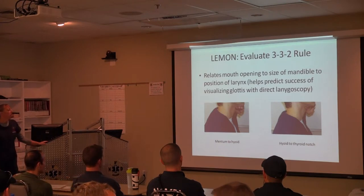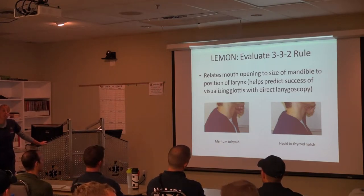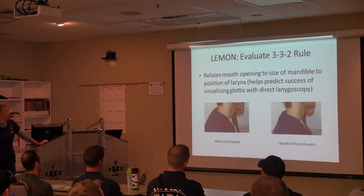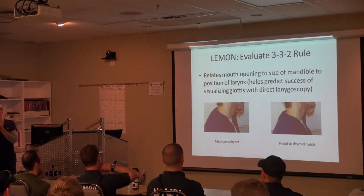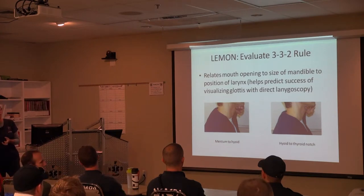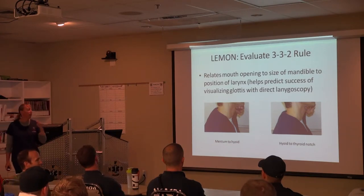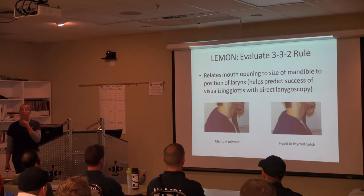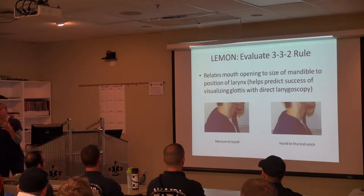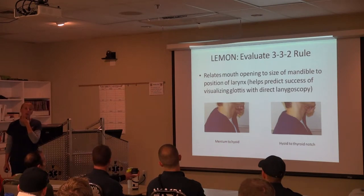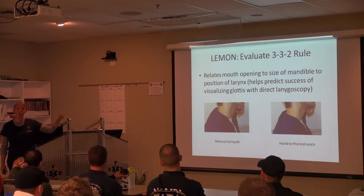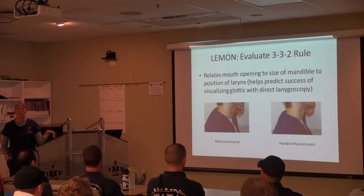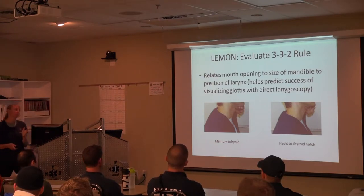The 3-3-2 rule predicts how successful you're going to be with direct laryngoscopy. The first measurement is the actual sub-mental space — the space you have to displace the tongue. The second measurement from the hyoid to the thyroid notch predicts how far down your vocal cords are. If someone has shorter than two fingers in that space, you know you'll need to do manipulation and real prep of patient positioning.